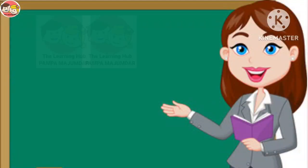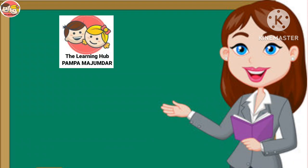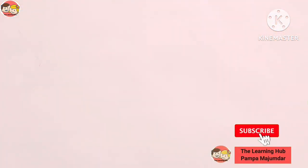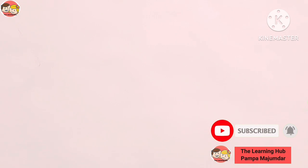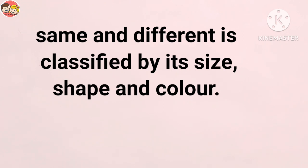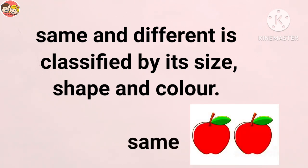Hello everyone, welcome to my channel, The Learning Hub. Today we will compare objects to see whether they are same or different. Same and different is classified by its size, shape, and color. When two or more objects look alike by their size, shape, and color, we call them the same objects.